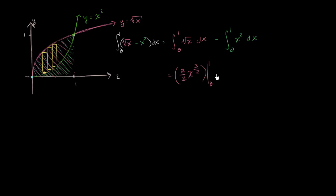And we're going to evaluate that from 0 to 1. And from that, we subtract the antiderivative of x squared, which is x to the third over 3. And we're going to evaluate that from 0 to 1 as well.